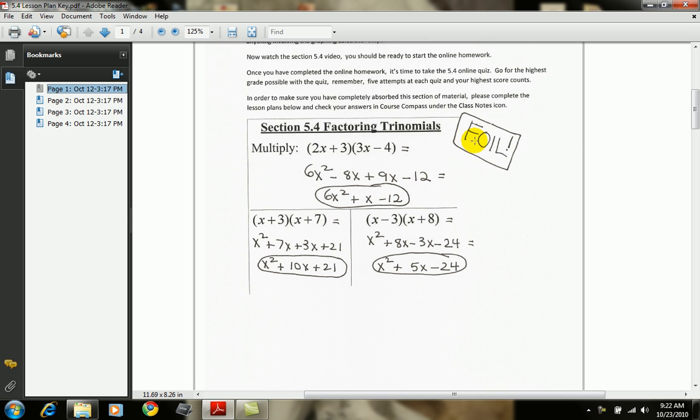FOIL stands for First, Outer, Inner, and Last. This acronym is used when you're multiplying together two binomials. So, for example, in this first example, 2x plus 3 multiplied by 3x minus 4.